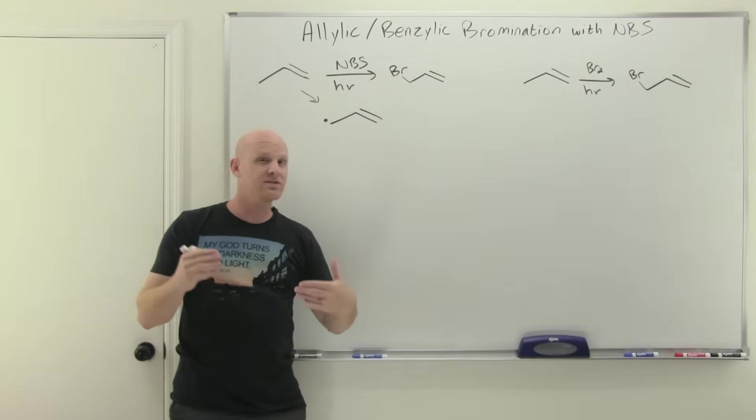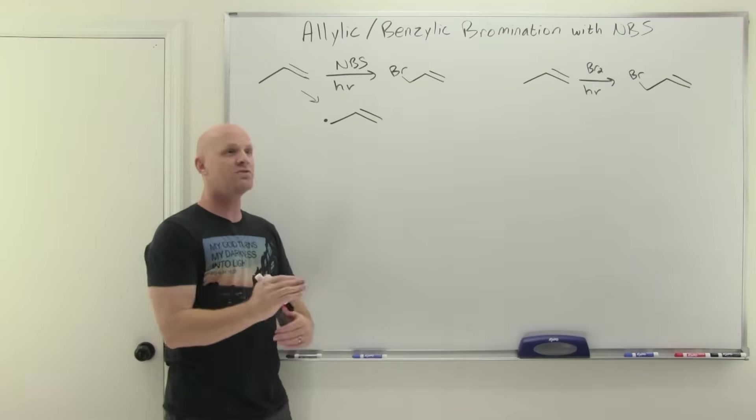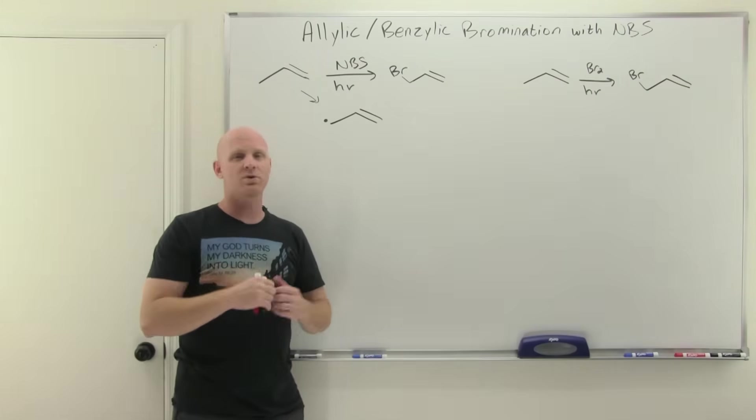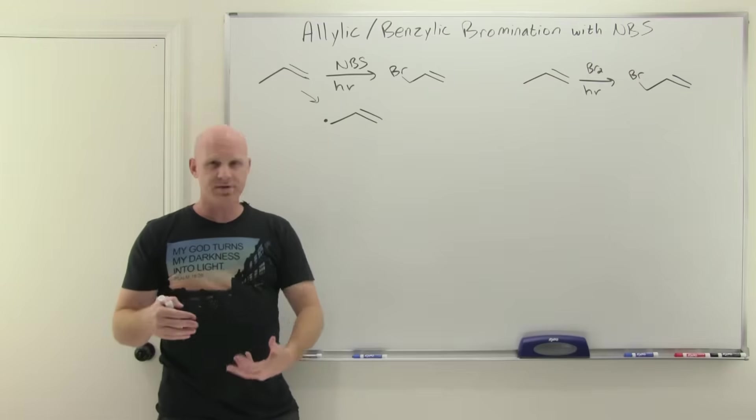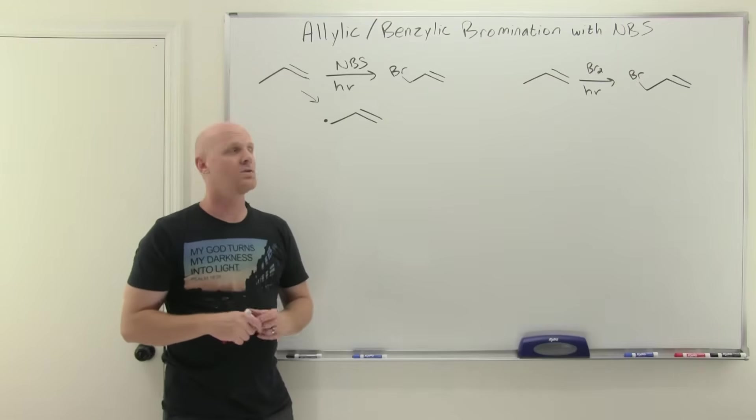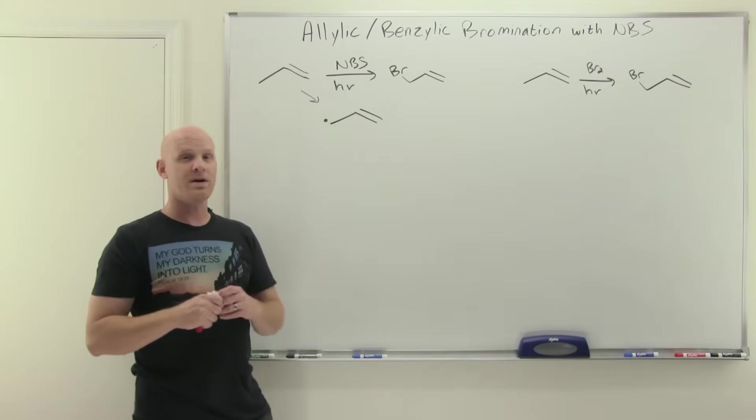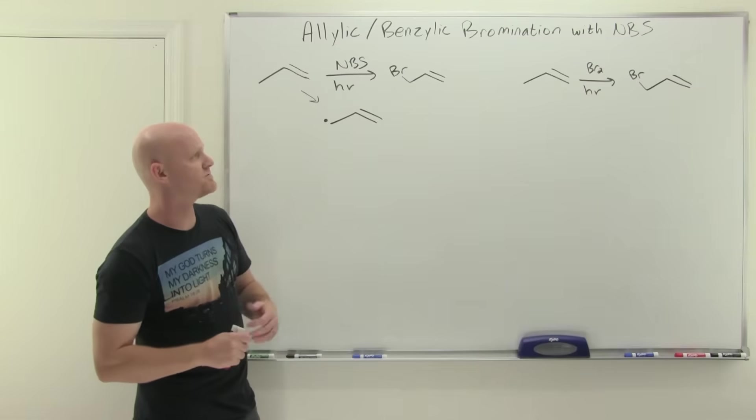And if you recall, bromination is very selective, and it's all about forming the most stable radical you can. And tertiaries were more stable than secondary, and secondary is more than primary, explaining why we have a strong preference of bromination for those tertiaries if possible.